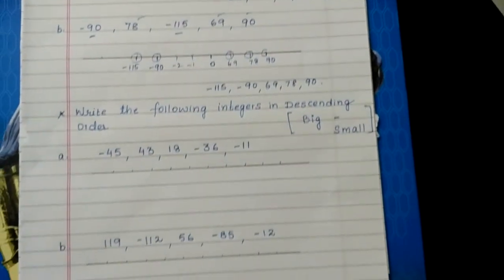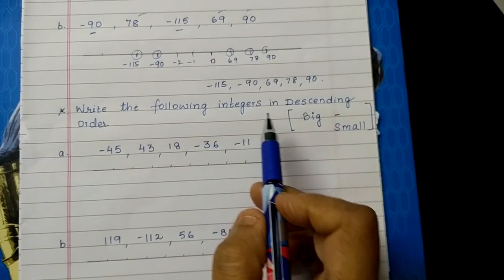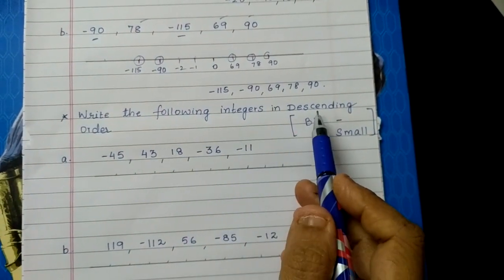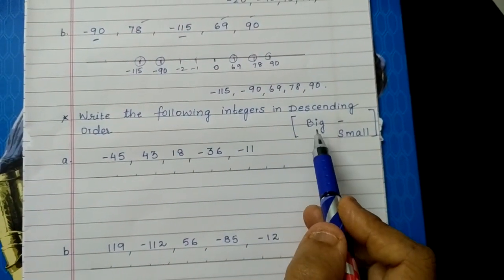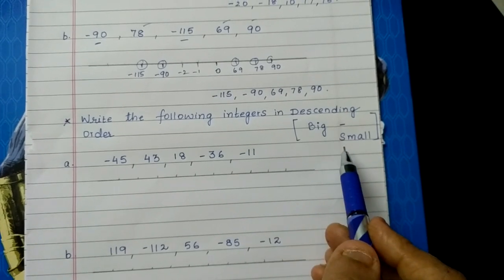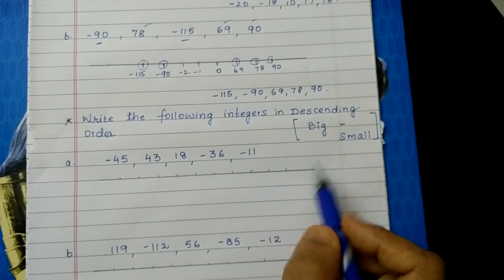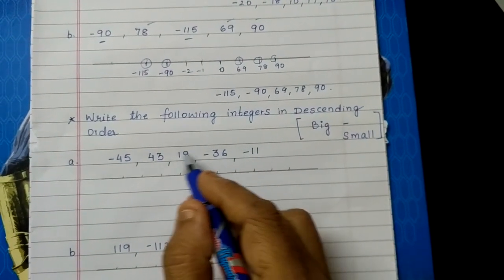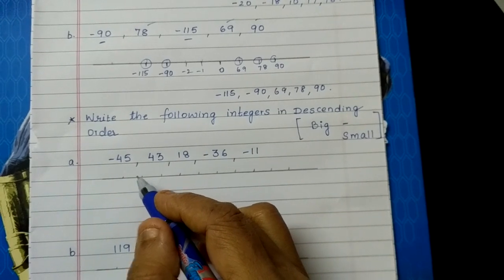Now write the following integers in descending order. What is descending order? Descending order means big to small — that means moving from right to left on a number line.